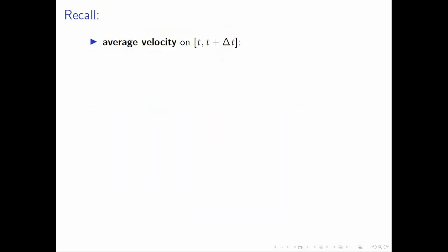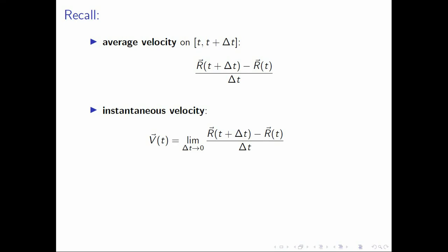We also have the average velocity on the interval t to t plus delta t, and this is the ratio r of t plus delta t minus r of t, all over delta t. On the other hand, the instantaneous velocity is the limit of our average velocity as delta t vanishes to zero, and this limit is just r prime of t.